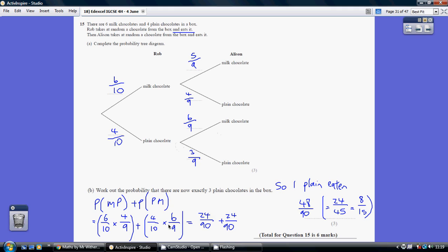Where it's an and, you multiply. So 4 over 10 times 6 over 9. Remember, to multiply fractions, it's top times top, bottom times bottom. So we get 2 lots of 24 over 90.